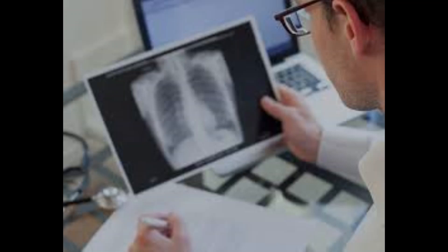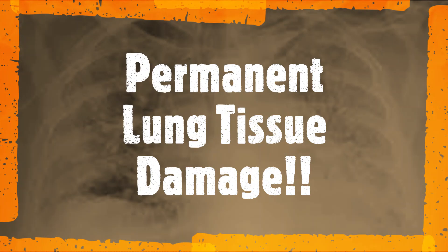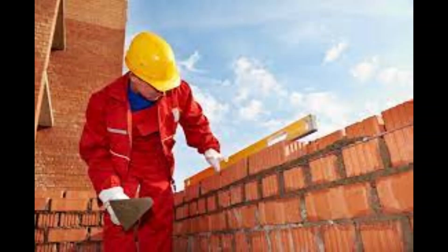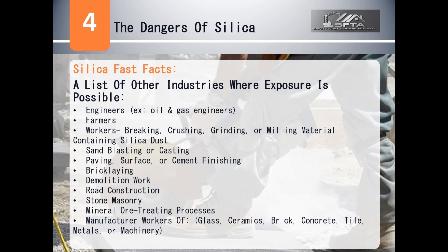Once silica is transported to the lungs, it permanently scars and damages the lung tissue. In addition to miners and masons, other industries where exposure is possible include oil and gas engineers, farmers, workers breaking, crushing, grinding, or milling material containing silica dust, sandblasting or casting, paving, surface or cement finishing, brick laying, demolition work, road construction, stone masonry, mineral ore treating processes, and manufacture workers of glass, ceramics, brick, concrete, tile, metals, or machinery.